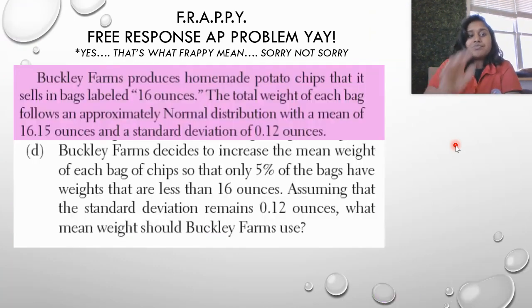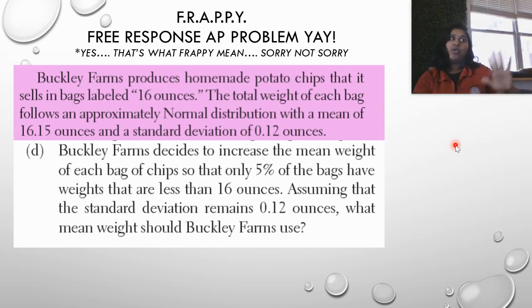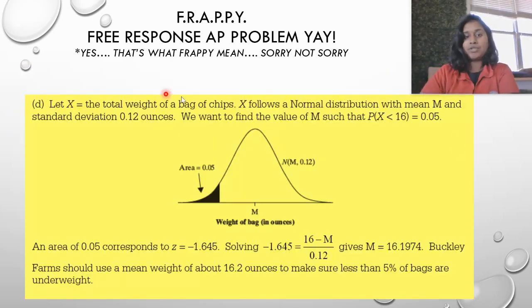Buckley Farms decides to increase the mean weight of each bag of chips so that only 5% of the bags have weights that are less than 16 ounces. We're referencing back to part A when we calculated that about 11% of the bags weighed less than 16 ounces. So we want only 5%. What do I have to do? I have to increase the original mean weight to reduce the number of bags that are below 16 ounces. Our standard deviation remains the same. What should I change the mean weight to? If I remember going back to part A, we worked that question forward. Basically go back to question A and work it backward. Instead of solving for your probability, we have the probability. We know we have 5%.